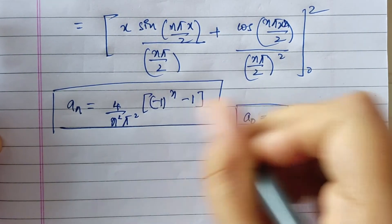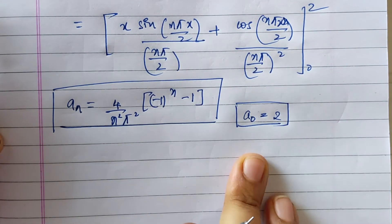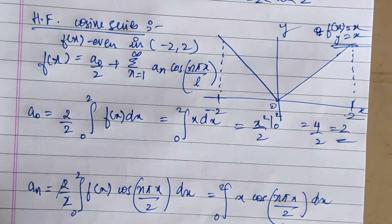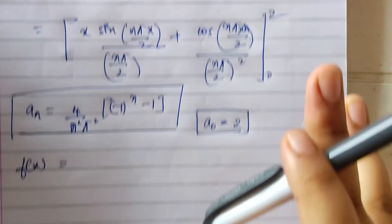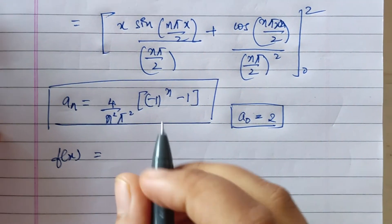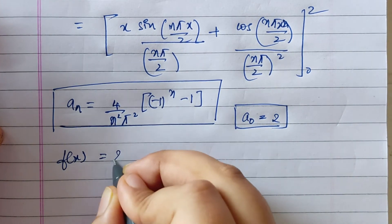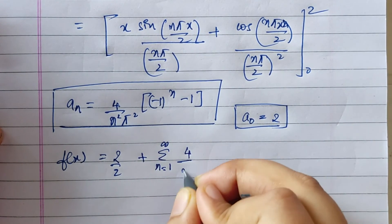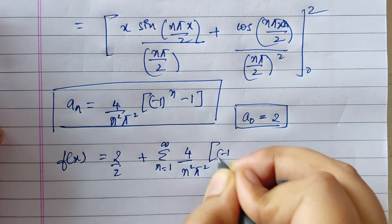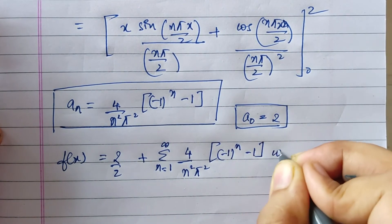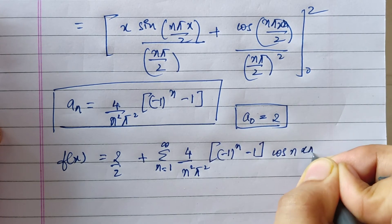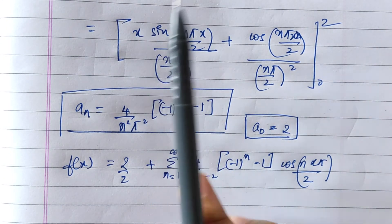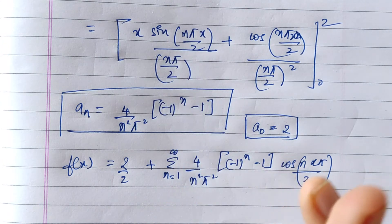So now we have the a0 and an values: a0 is equal to 2 and an is equal to that expression. Now we put these into the main equation. f(x) is equal to 2 by 2 plus summation of n equals 1 to infinity of [4 divided by (n squared pi squared)] times (minus 1) to the power (n minus 1) times cos(n pi x / 2).